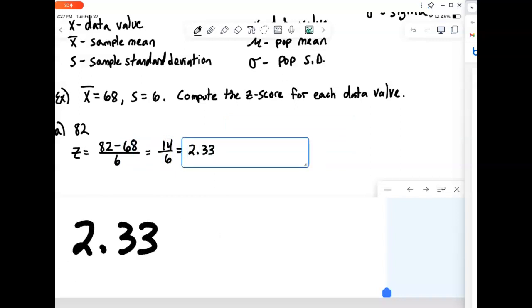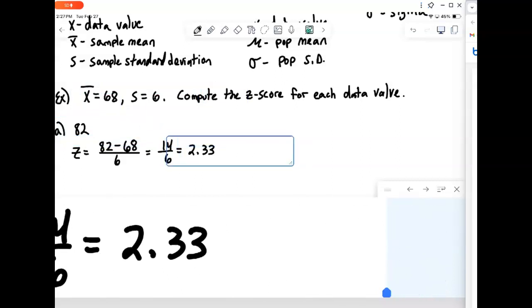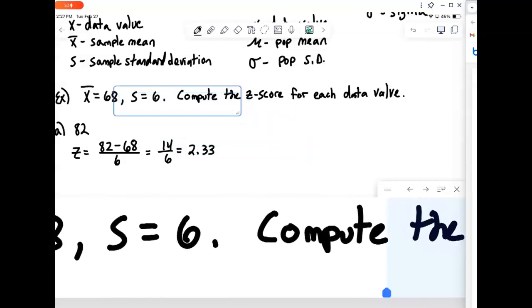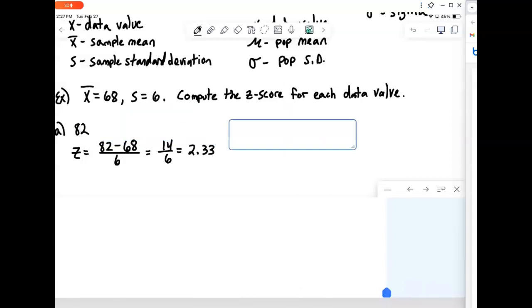Okay, and because that's positive, and we can see 82 is above 68, that's 2.33, two and a third standard deviations above the mean.